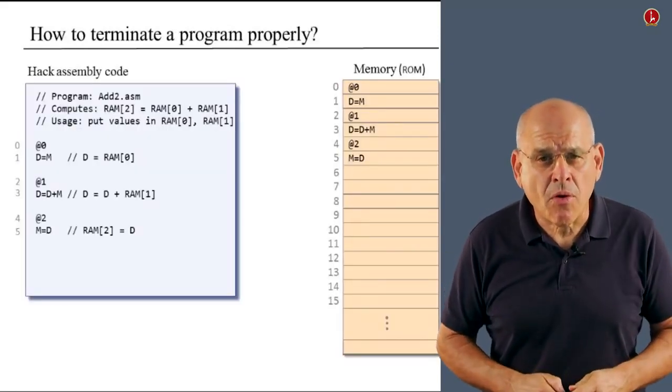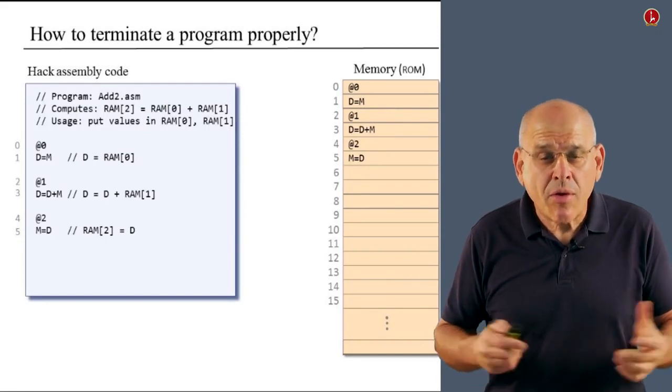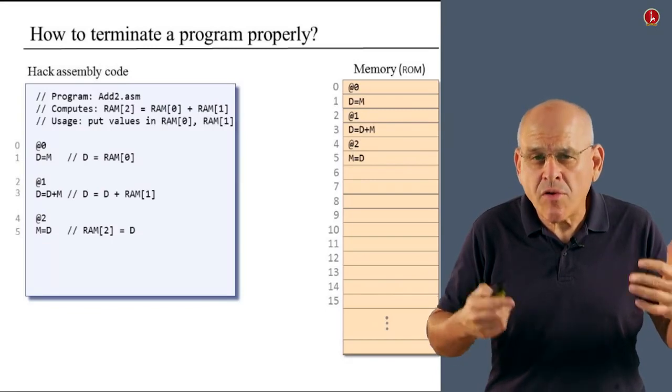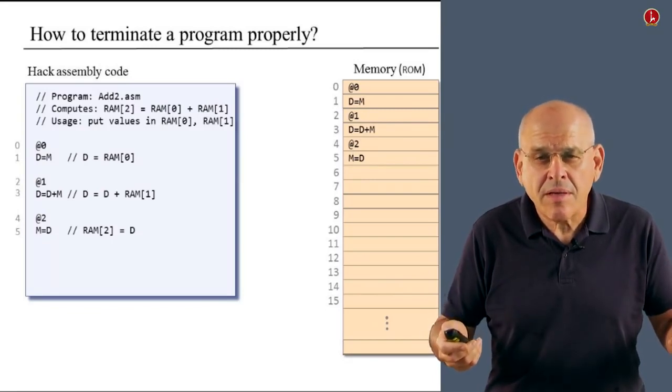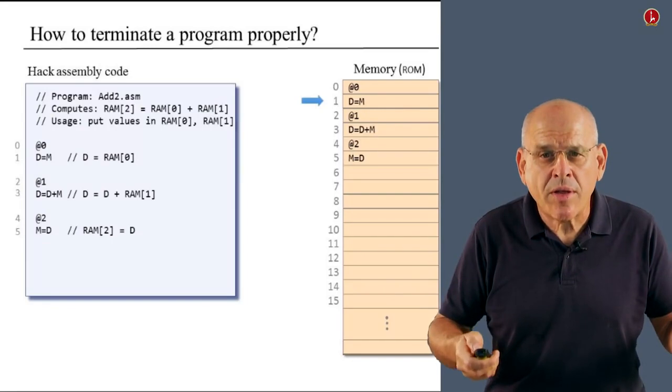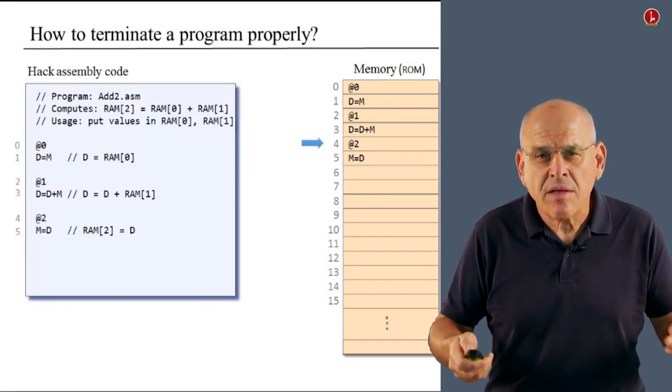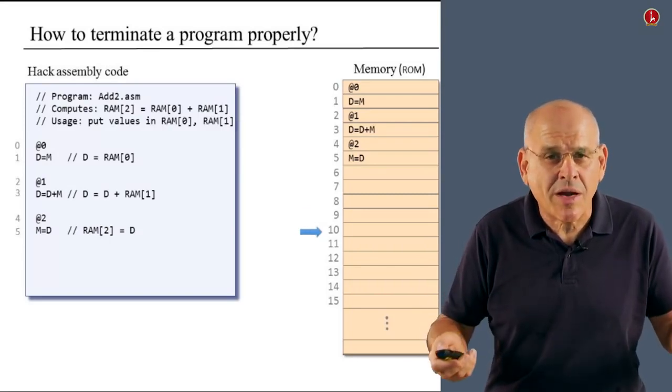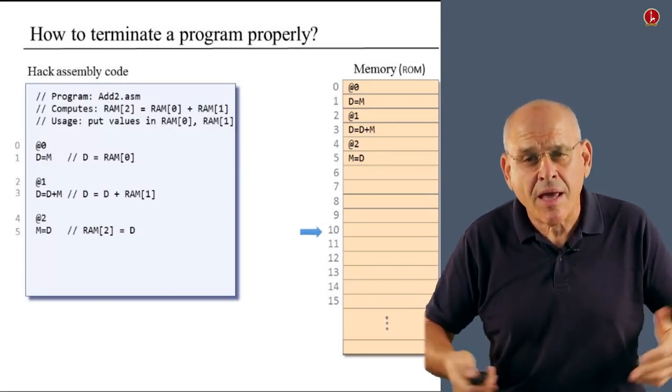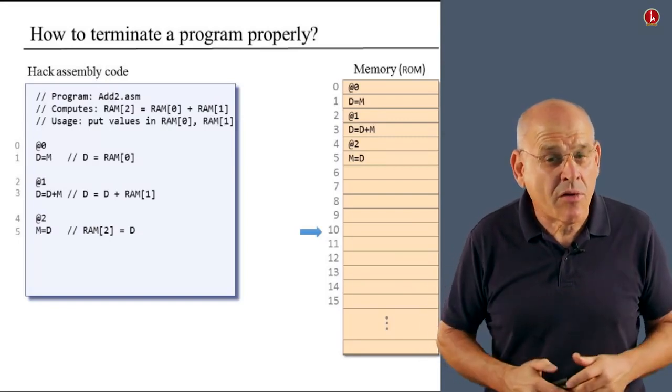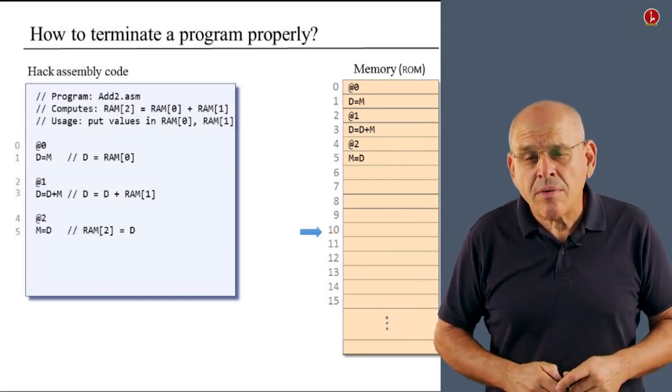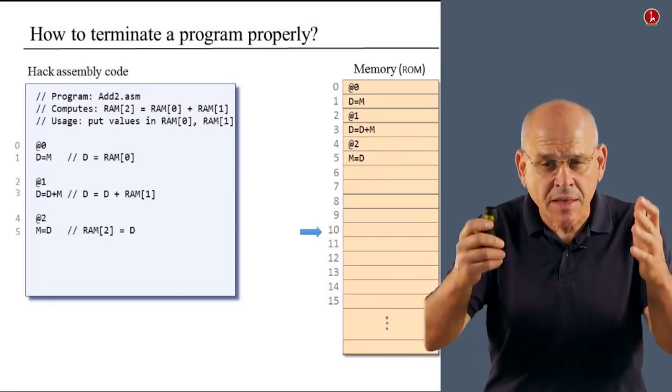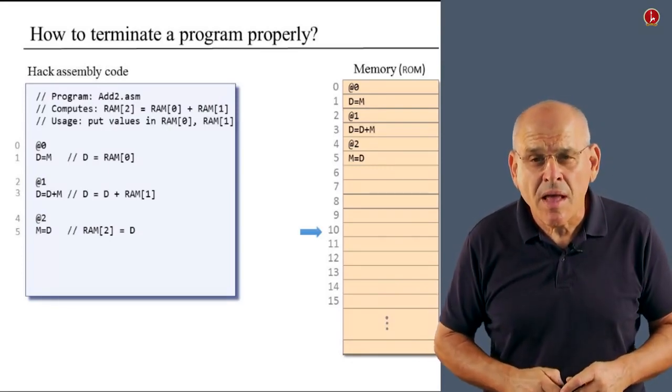So having seen the demo that we just went through, and having seen also the problem that we encountered at the end of this demo, let us see what we can do in order to terminate a program properly. Now, to remind you, the problem that we had is that the flow of control became kind of uncontrollable. And basically, we told the computer to execute every instruction, everything was just fine, but then other so-called instructions came into play, and the computer basically went out of control.